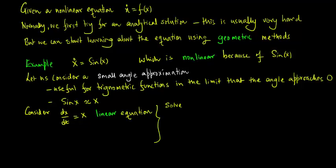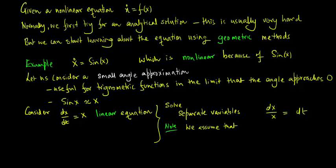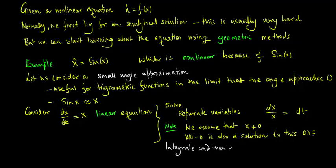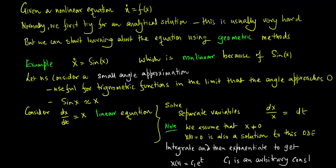To solve the linear equation dx/dt = x, we separate variables to get dx/x is equal to dt. Note that we are assuming x is not equal to 0; however, x of t equal to 0 is also a solution to this ordinary differential equation. Integrating and exponentiating, we find the solution x of t is equal to c1 e to the t, where c1 is an arbitrary constant.